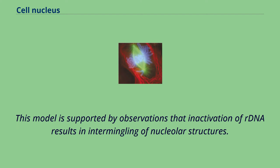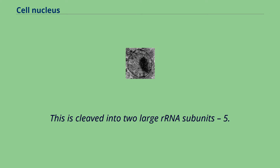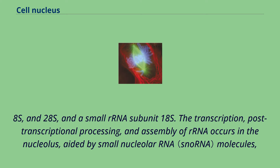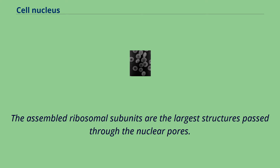In the first step of ribosome assembly, a protein called RNA polymerase I transcribes rRNA, which forms a large pre-rRNA precursor. This is cleaved into two large rRNA subunits — 5.8S and 28S — and a small RNA subunit 18S. The transcription, post-transcriptional processing, and assembly of RNA occurs in the nucleolus, aided by small nuclear RNA molecules, some of which are derived from spliced introns from messenger RNAs and coding genes related to ribosomal function. The assembled ribosomal subunits are the largest structures passed through the nuclear pores.